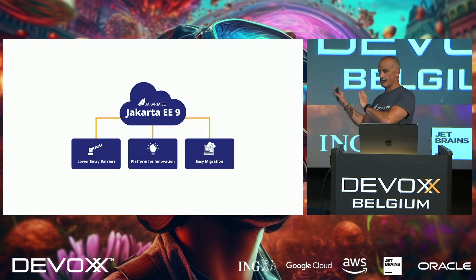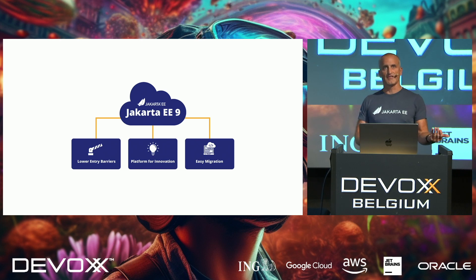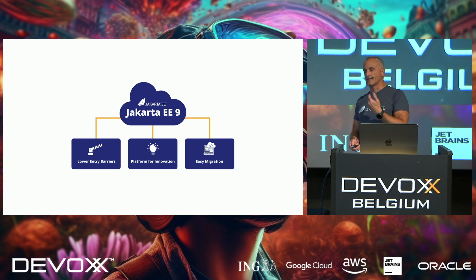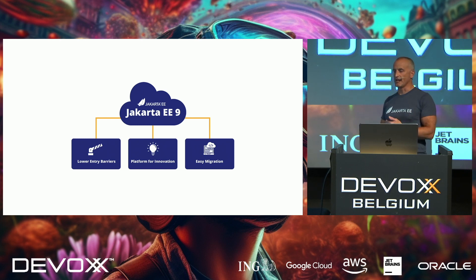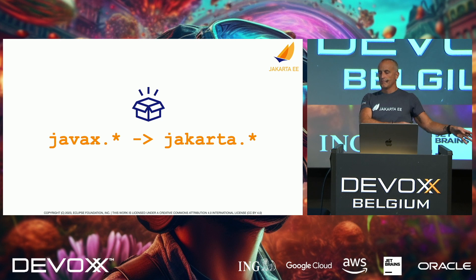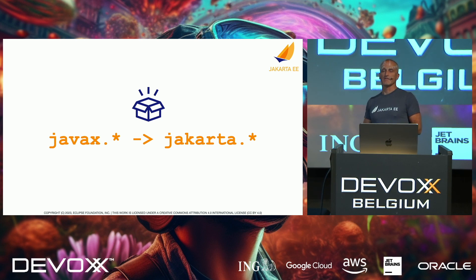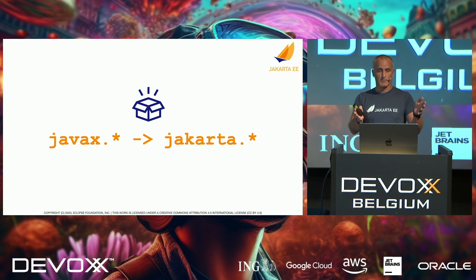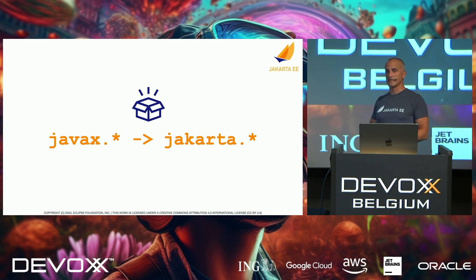Let me sum up and look back at the history. Jakarta EE 9 was about lowering entry barriers and creating a platform for innovation — making the migration from Java EE easy. We didn't add much functionality; the main change was the namespace change from 'javax' to 'jakarta' for all packages. This is hitting the ecosystem now, with Spring Boot 3 and Spring 6 requiring this change — which is why I have a session tomorrow on migrating from Spring Boot 2 to Spring Boot 3 with focus on the namespace change.